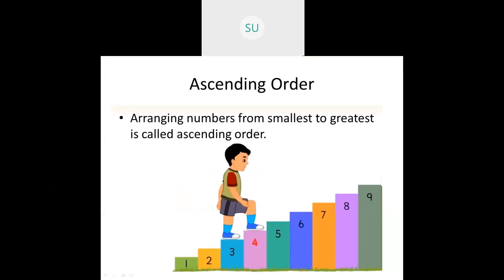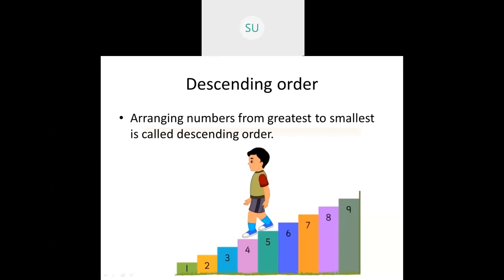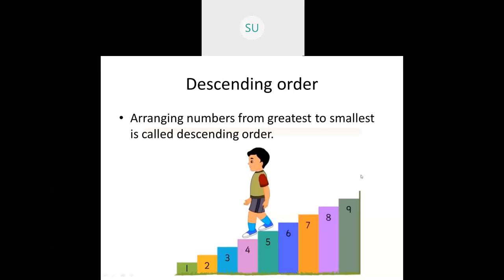Then descending order. Once he reached the top, he is coming down: 9, 8, 7, 6, 5, 4, 3, 2 and 1. From the higher number he is coming to a lower number — that is descending. Arranging numbers from the greatest to the smallest is called descending order. He came from 9 to 1 in a decreasing order.